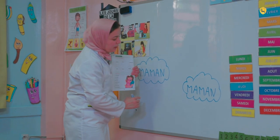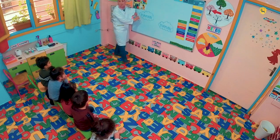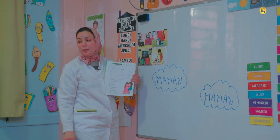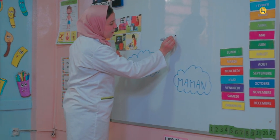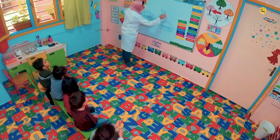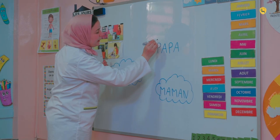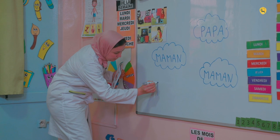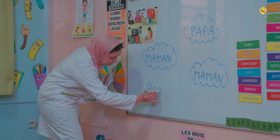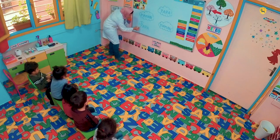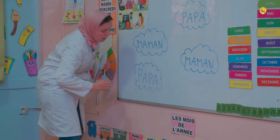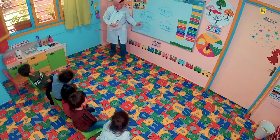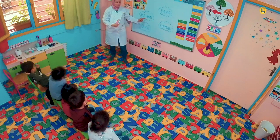Je vais écrire le mot « maman » une deuxième fois. Vous voyez ? Le mot « maman » commence par la lettre « m ». On a deux étiquettes semblables — maman, maman. Maintenant, je vais écrire papa. Le mot papa commence par la lettre P : P-A-P-A. Papa. On a deux étiquettes semblables du mot papa et deux étiquettes semblables du mot maman.